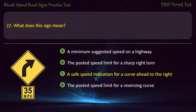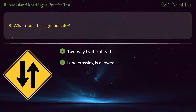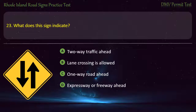Question 23. What does this sign indicate? Two-way traffic ahead, lane crossing is allowed, one-way road ahead, expressway or freeway ahead. Answer: Two-way traffic ahead.